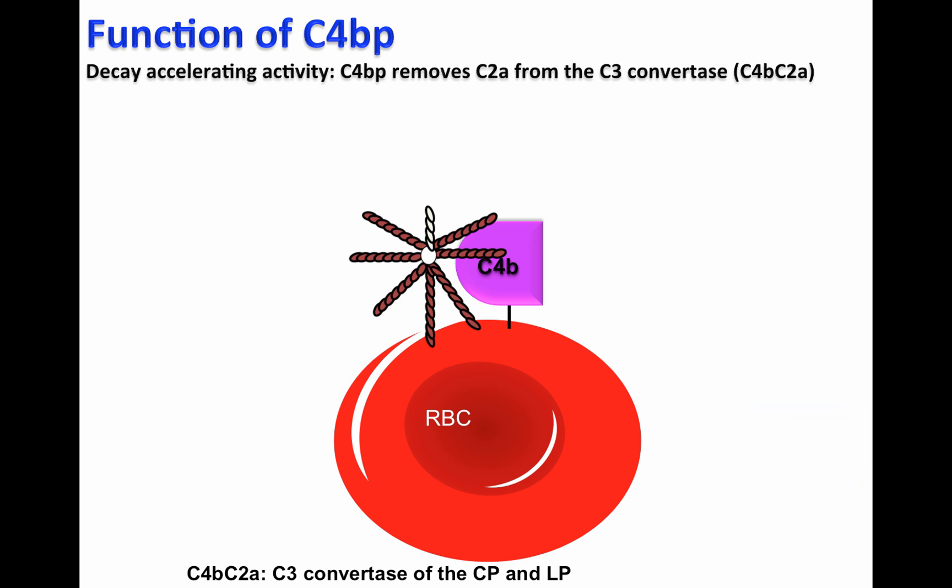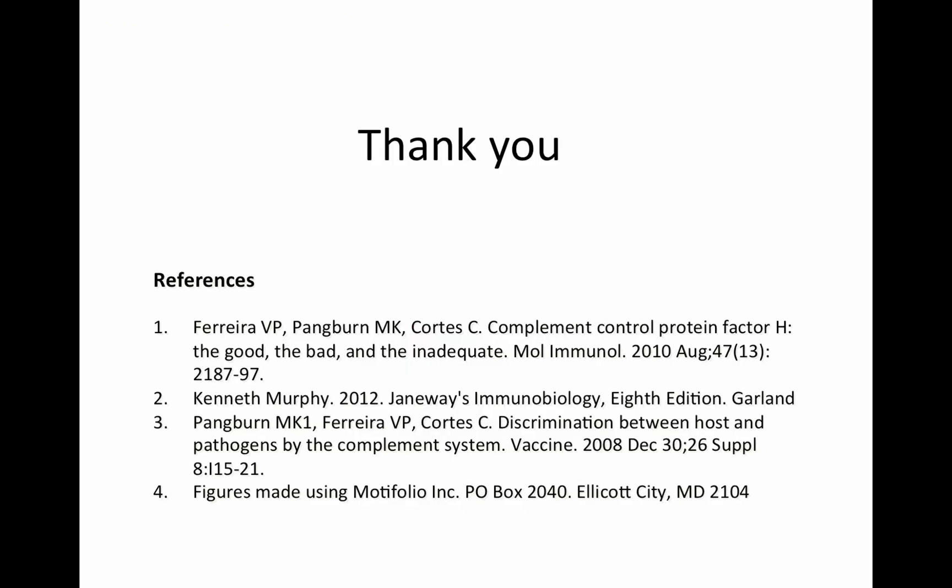C4BP is accelerating the decay of the C3 convertase. By accelerating the decay of the C3 convertase, C4BP is protecting the red blood cells from being lysed by the complement system. Thank you.